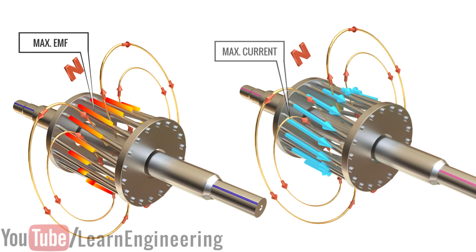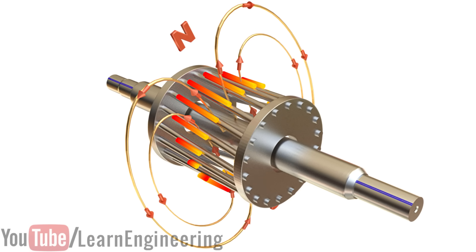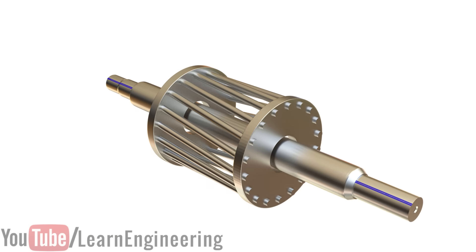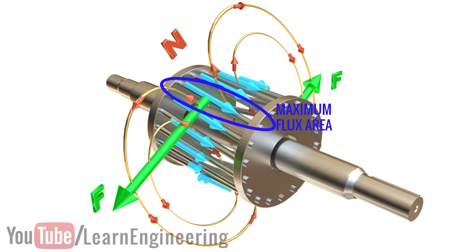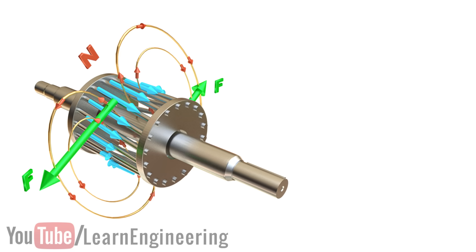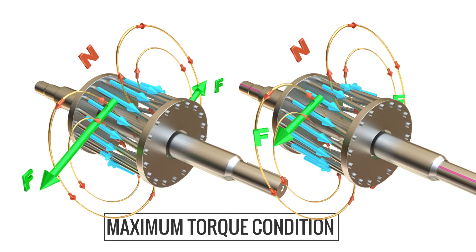Now, here is one interesting fact about induction motors. An induction motor produces maximum torque when the maximum current induced on the rotor is near to the maximum magnetic flux. This fact is clear from the comparison of these two visuals. Let us call it the maximum torque condition. Throughout this video, please keep this fact in mind.